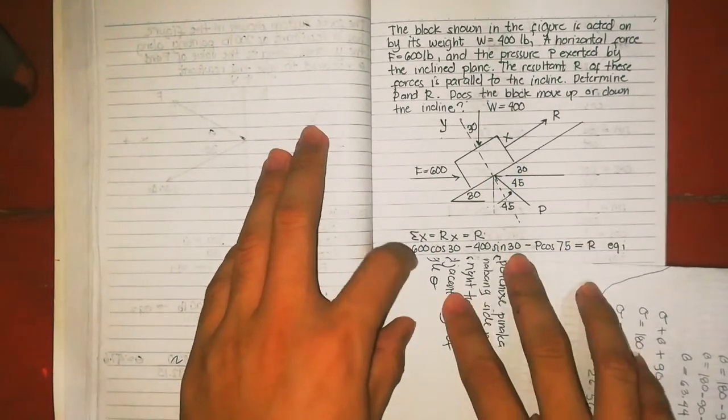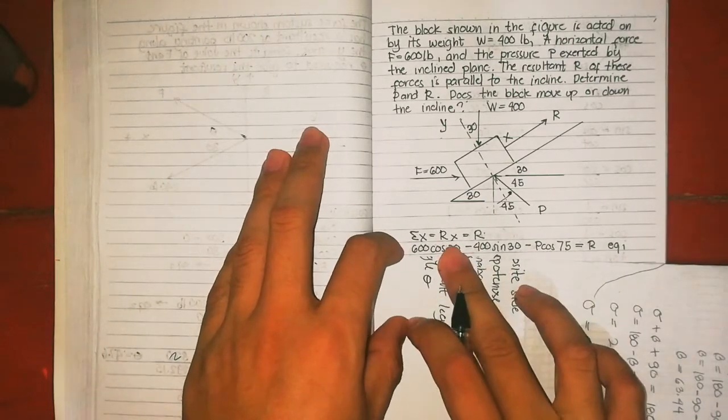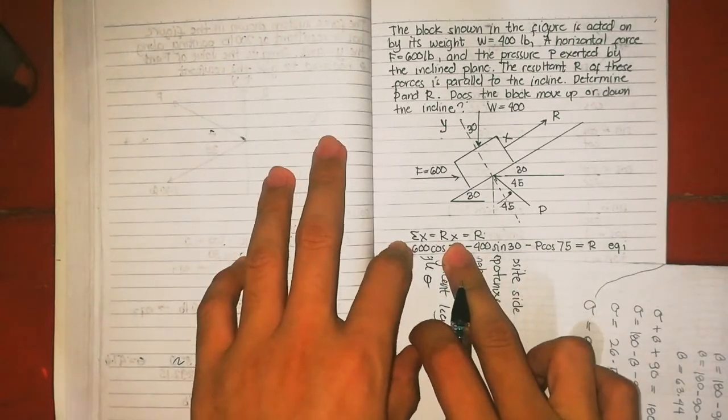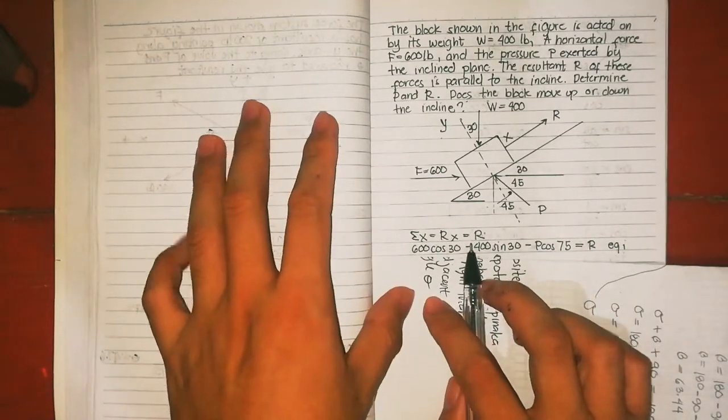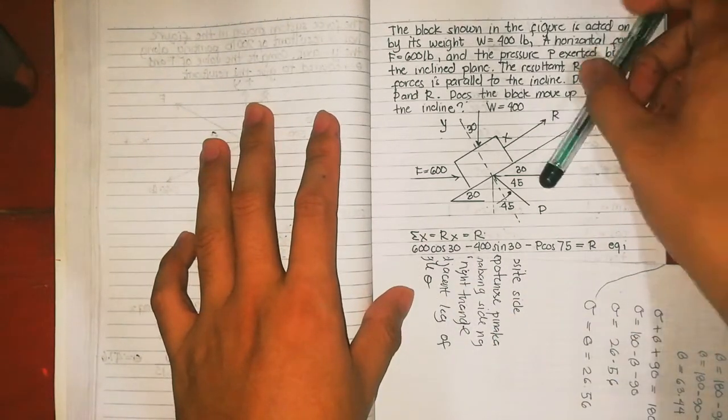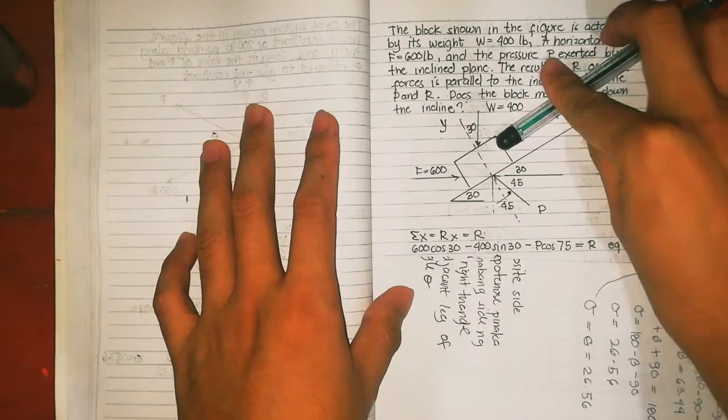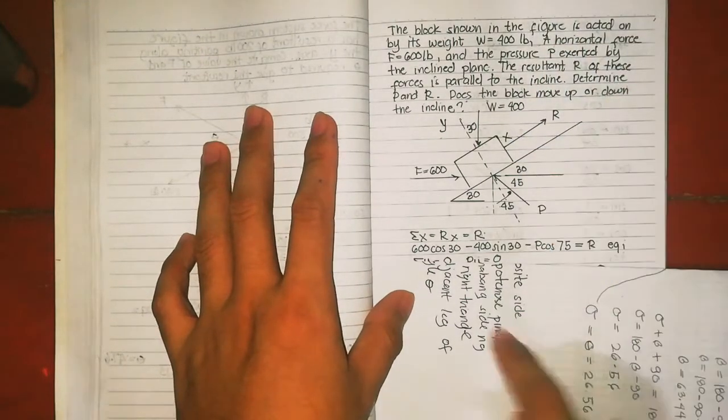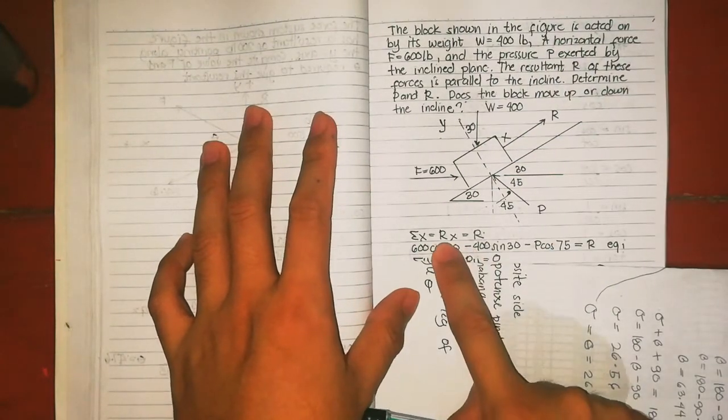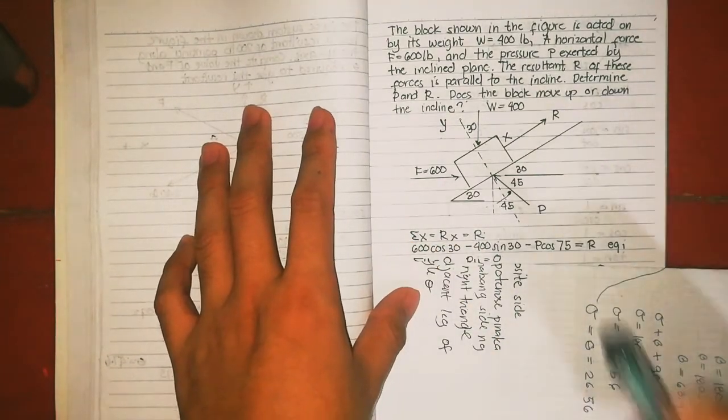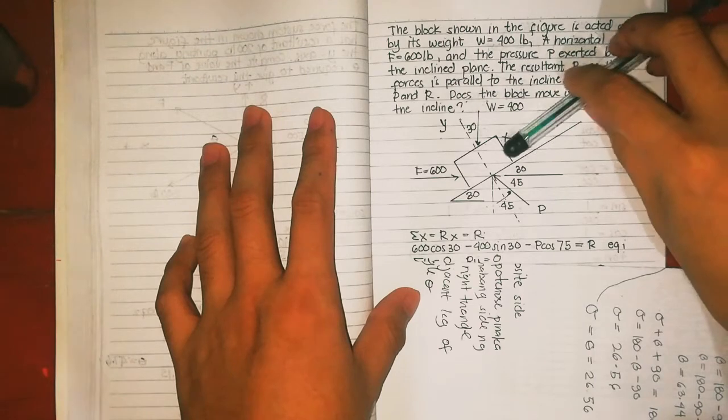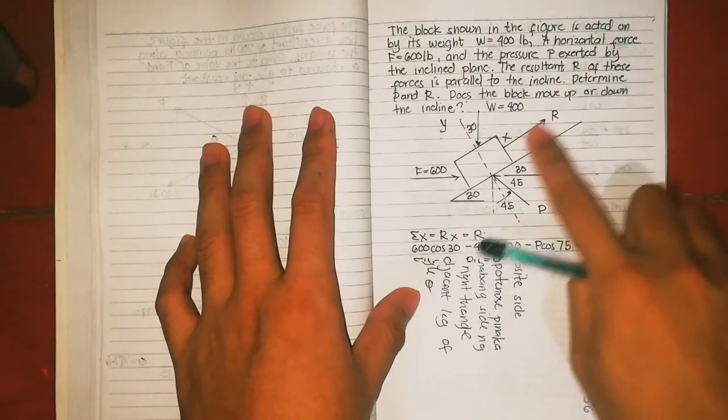Summation of X equals resultant of X equals R, because our resultant is along the X-axis only. So R equals Rx, then summation of X. This R is just an assumption, you can assume going up or going down.